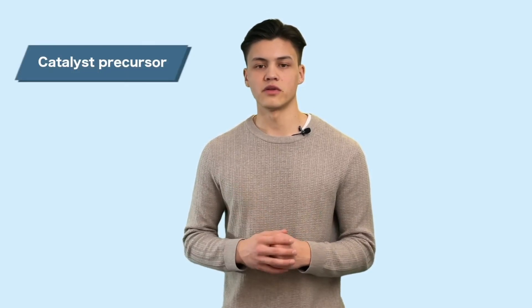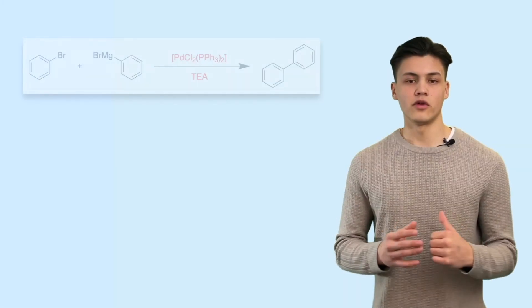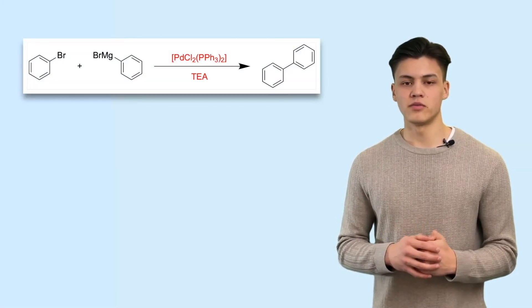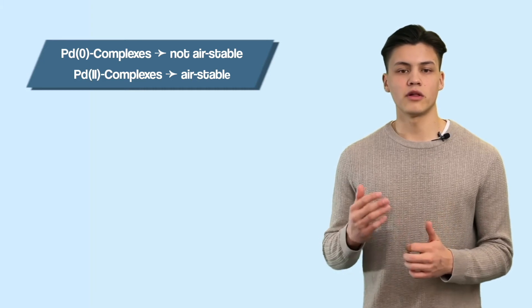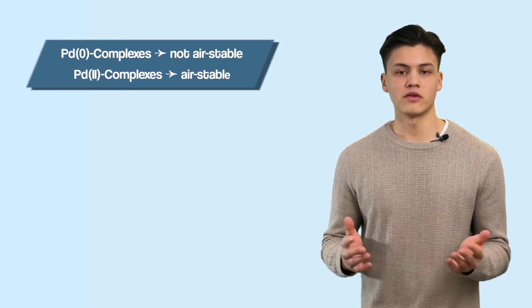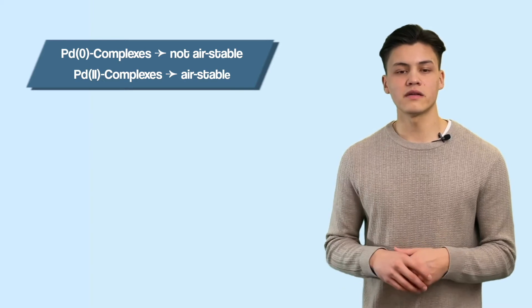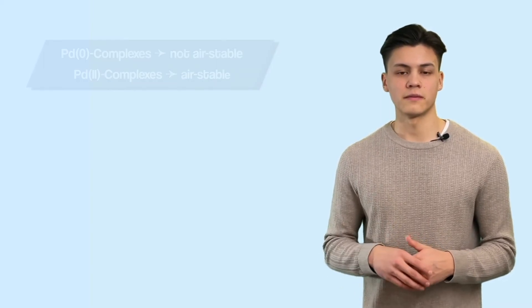In the lab, you often don't work with a palladium(0) complex directly. You usually give a catalyst precursor — a palladium(II) complex — into the solution. This can be, for instance, the dichloro-bis(triphenylphosphine)palladium(II) complex. This is because palladium(0) complexes are not air-stable, so it's easier to use an air-stable palladium(II) complex and convert it to palladium(0) in solution. This is done using triethylamine, though other reagents can also be used.